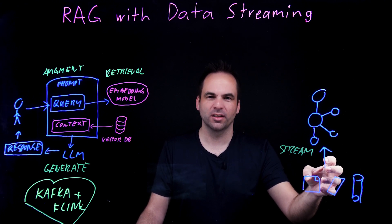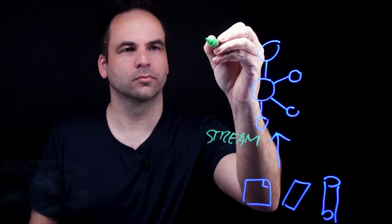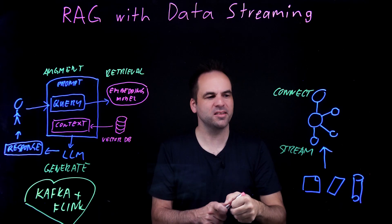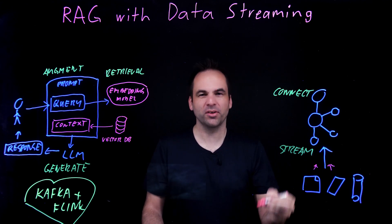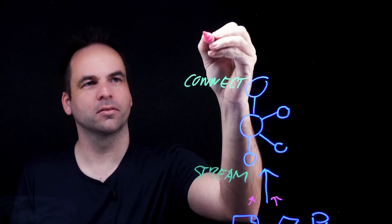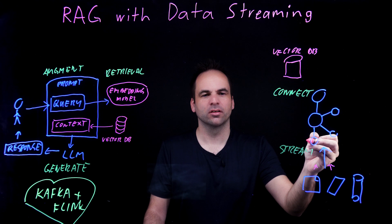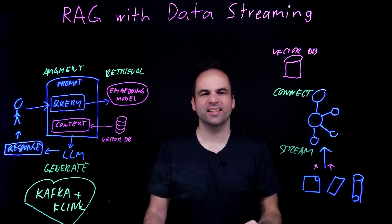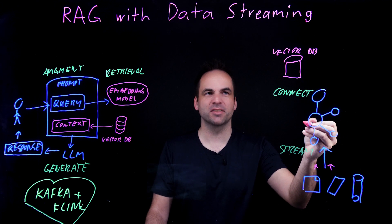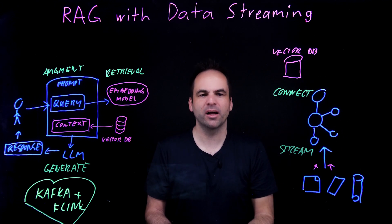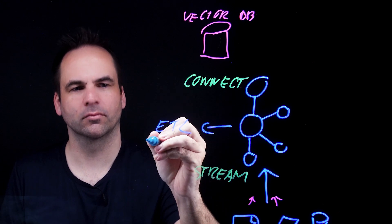On top of that, in a data streaming platform, you have all the connectors, and in the cloud, that end-to-end pipeline is fully managed and cloud-native. On the other side, for Gen AI, we also need a specific vector database. With this architecture, we can now think about the next level — we have not just all our data feeds like in a traditional Kafka pipeline, but we also have the capability to build a RAG. For that kind of scenario, we will leverage Apache Flink for several workloads.